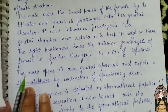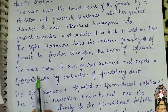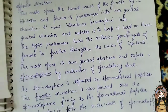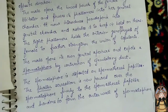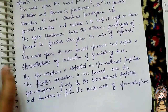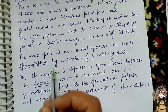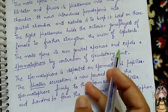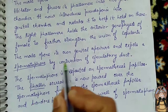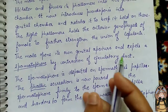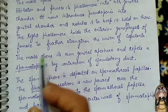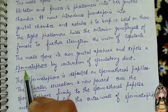Next, the male opens its own genital aperture and expels its spermatophore by contraction of the ejaculatory duct. In the previous video, we studied what a spermatophore is.